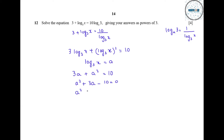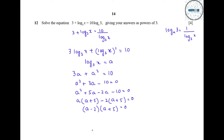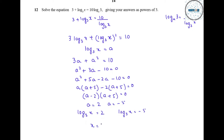We apply middle term breaking: a² plus 5a minus 2a minus 10 equals 0, since 5 minus 2 gives 3 and 5 multiplied by 2 gives 10. Taking common factors: a(a plus 5) minus 2(a plus 5) equals 0, so a equals 2 and a equals minus 5. Replacing a with log₃x: log₃x equals 2 gives x equals 3², and log₃x equals minus 5 gives x equals 3⁻⁵.